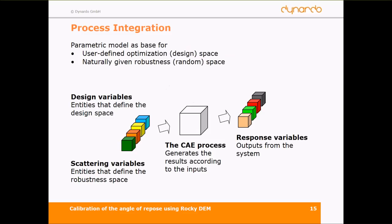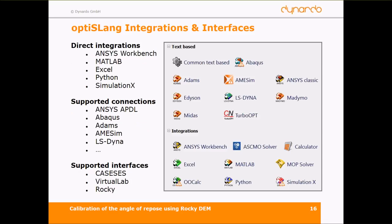Now the process integration. What is OptiSLang doing? In normal cases, we have a user-defined design space consisting of design variables and scattering variables. With these we go into the CAE process — a white box because you know what your CAE process is doing. After the CAE process, you get a few response variables as your outputs.